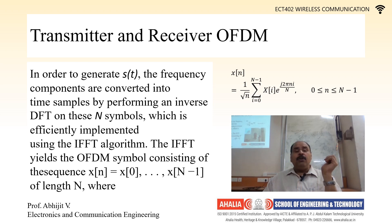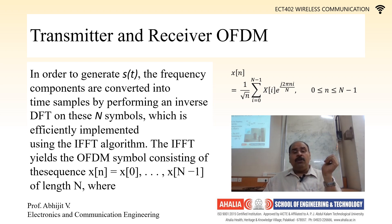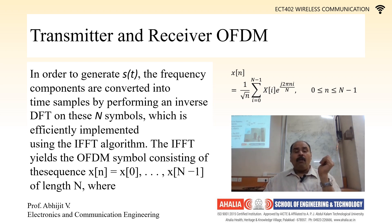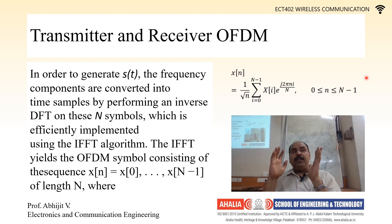The IFFT is the OFDM symbol consisting of the sequence x[n] equal to x[0] to x[N-1] of length N, where x[n] = (1/√N) * sigma from i=0 to N-1 of Xi e^(j2πni/N), where n lies between 0 and N-1, and N is the total number of sub-channels.